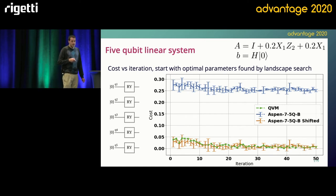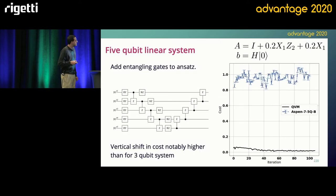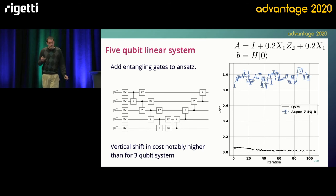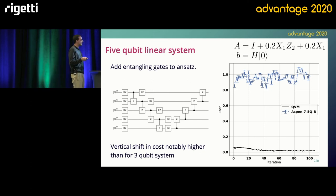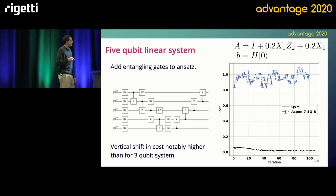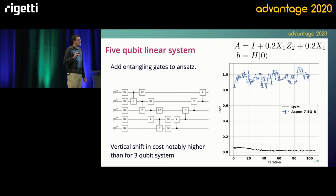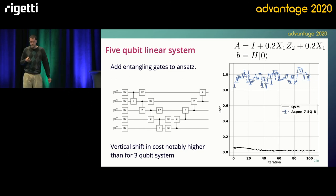The next thing we can do is take the ansatz and add some entangling gates to it. We start with the layer of Y rotations and then add nearest-neighbor CZs and put a layer of Z rotations in the middle. The reason to do this is that for the angle of the Z rotations set to zero, this collapses to the previous ansatz and you can still obtain the same solution. Looking at the data obtained from this, as expected, the vertical shift here is higher, but you still obtain some features of the shape of the landscape and you can do the optimization.